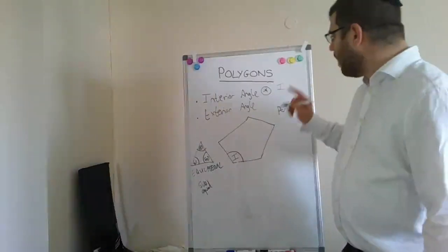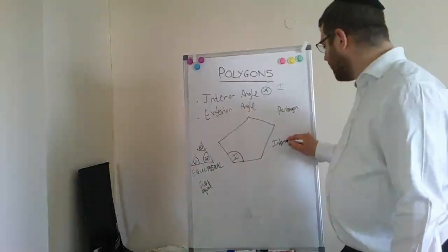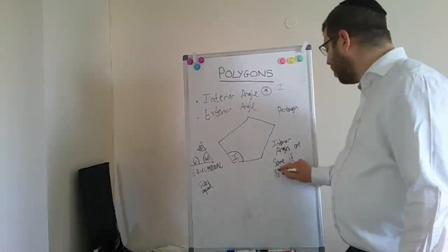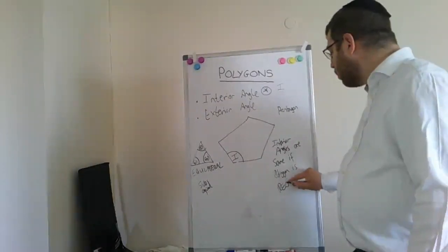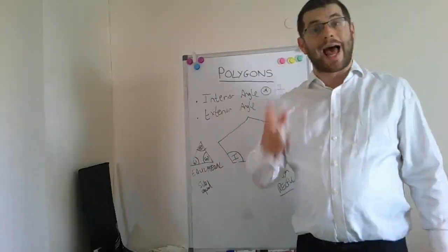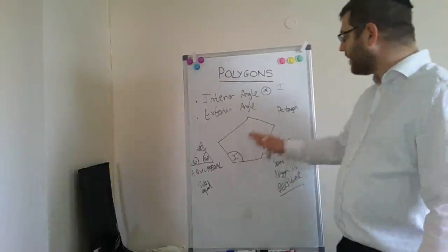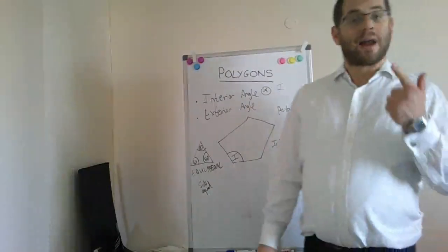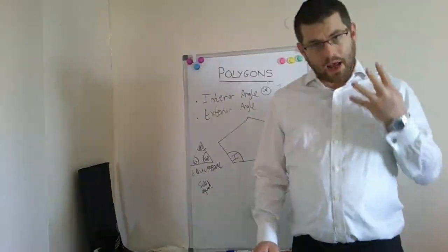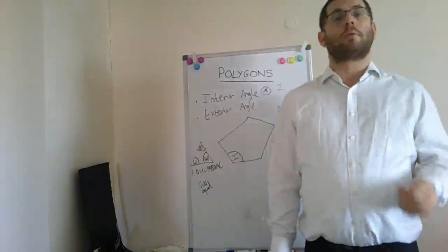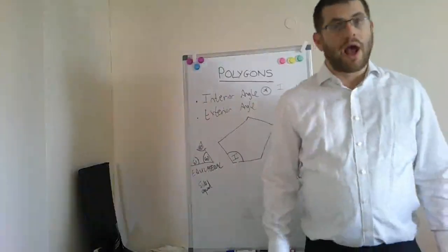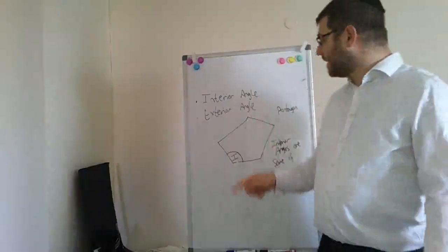Write this down: for a polygon, the interior angles are the same if the polygon is regular. A regular polygon has all sides the same — that's the language used in the exam. If you are told that a polygon is regular, then you know that the interior angles are all the same. You cannot assume a polygon is regular just from a diagram. The question must tell you, or give you lengths. If it's regular, the sides and interior angles are all the same; if it's irregular, the interior angles and sides may all be different.